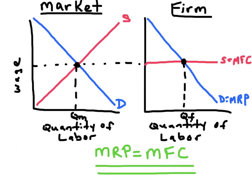When graphing a perfectly competitive resource market, such as labor, it is a good idea to graph the market for the resource and the firm hiring the resource side by side. You want to show that the resource market is going to set the wage, and the firm is going to take the wage from the resource market. We have the supply of workers and the demand for workers in the labor market, which is perfectly competitive. The equilibrium wage gets sent to the firm — that wage is the firm's supply of labor, or the marginal factor cost of hiring one more worker.